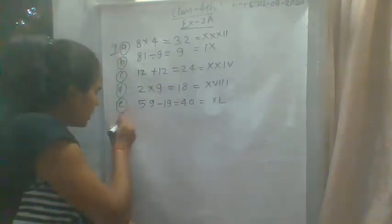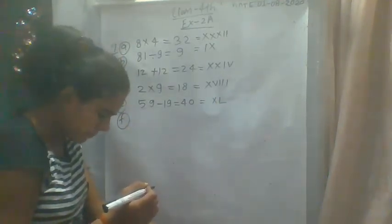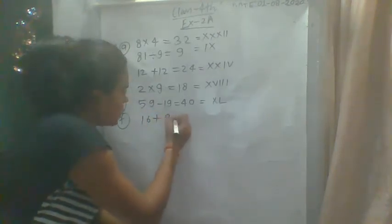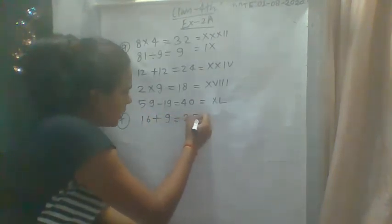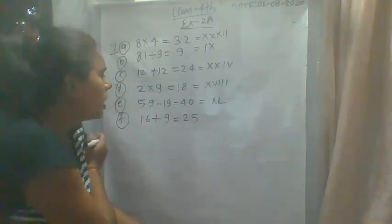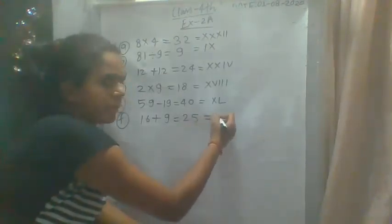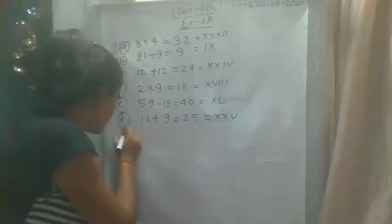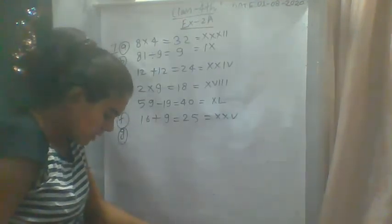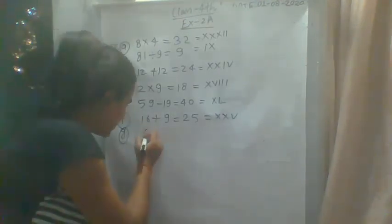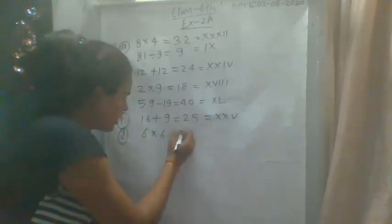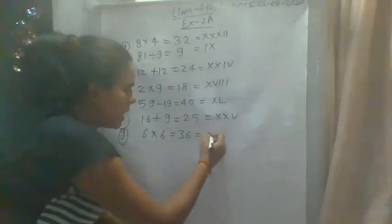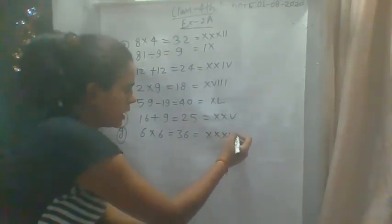Then F: 16 plus 9. How much is your answer? 25. The answer is XXV. Then G: 6 multiplied by 6 equals 36. So the answer is XXXVI.